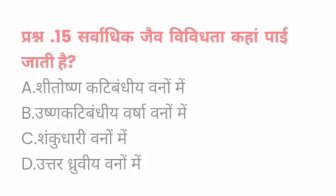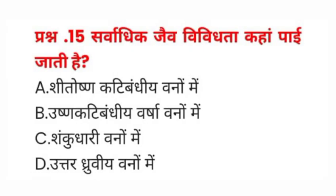Question number fifteen: सर्वाधिक जैव विविधता कहाँ पाई जाती है? A) शीतोष्ण कटिबंधीय वनों में, B) उष्ण कटिबंधीय वनों में, C) शंकुधारी वनों में, D) उत्तर ध्रुवीय वनों में। इसका सही जवाब B) उष्ण कटिबंधीय वर्षा वनों में होगा।